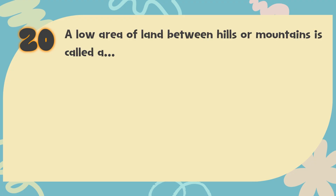Number 20: A low area of land between hills or mountains is called a blank. The choices are: A. Plain, B. Valley, C. Plateau, D. Peak.